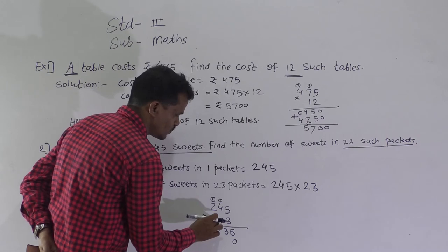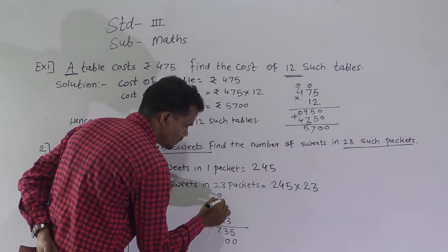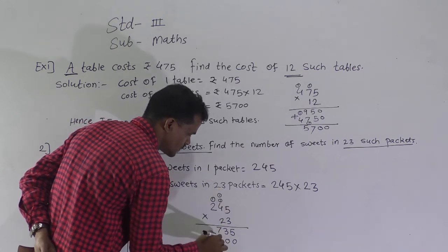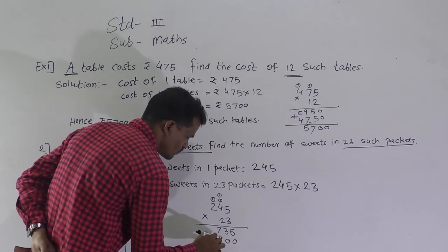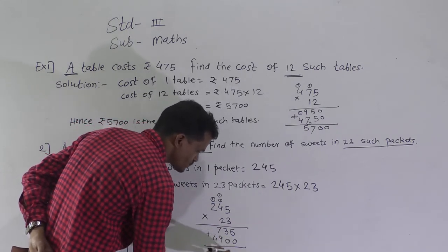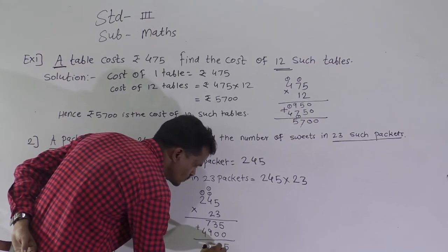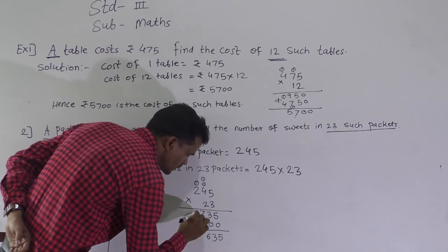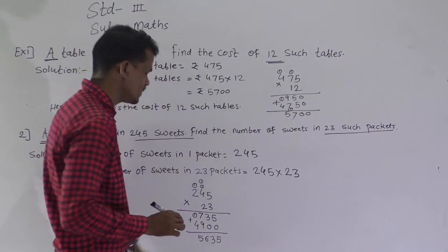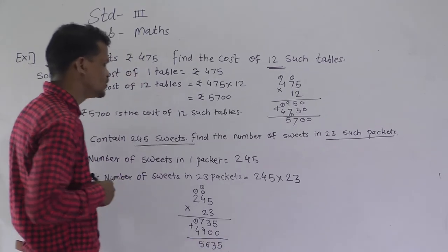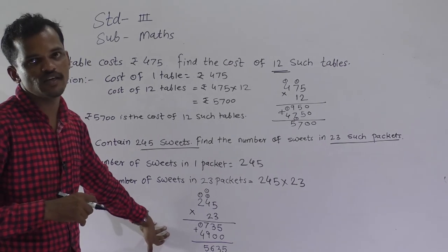Second partial product: 2 fives are 10, write 0, carry 1. 2 fours are 8 plus 1 is 9. 2 twos are 4. Now add the two partial products: 5 plus 0 is 5, 3 plus 0 is 3, 7 plus 9 is 16 — write 6, carry 1 — then 4 plus 1 is 5. So 5635 sweets are there in 23 packets.